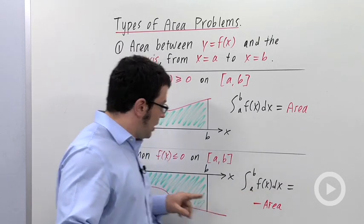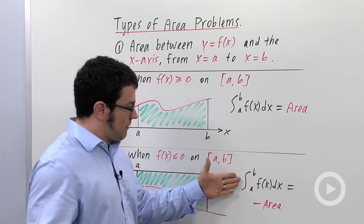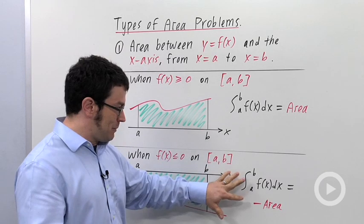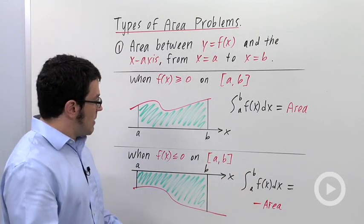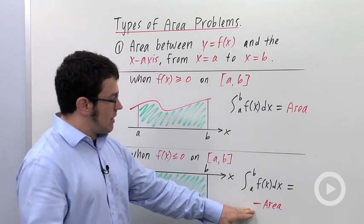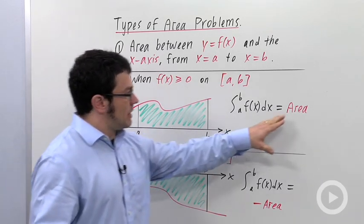It gives you the opposite of the area. So if you're looking for this area, you can use the definite integral, but you just have to remember to flip the sign. You're going to get a negative number. You should make it positive. When the function's negative, you'll get the opposite of the area. When it's positive, you'll get the area.